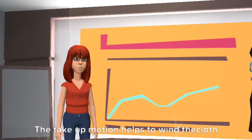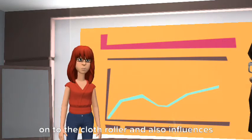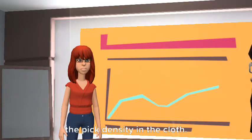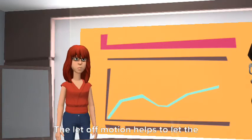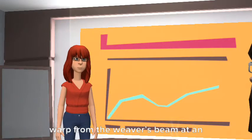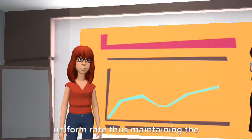The take up motion helps to wind the cloth onto the cloth roller and also influences the pick density in the cloth. The let off motion helps to let the warp from the weaver's beam at a uniform rate, thus maintaining the warp tension constant throughout the weaving process.